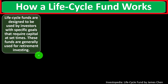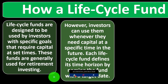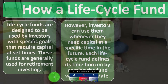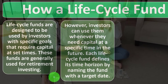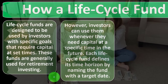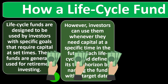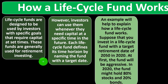Life cycle funds are designed to be used by investors with specific goals that require capital at set times. These funds are generally used for retirement investing, but investors can also use them whenever they need capital at a specific time in the future — for example, saving for a child's tuition. That's a nice easy way to use the targeting metrics built into the fund rather than trying to build your own targeting matrix that you'd have to adjust as you get closer to the target date.